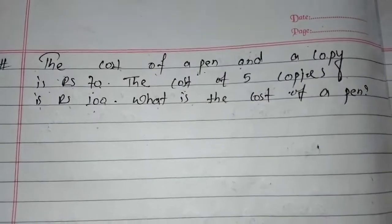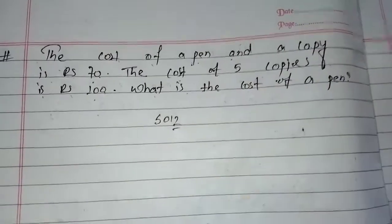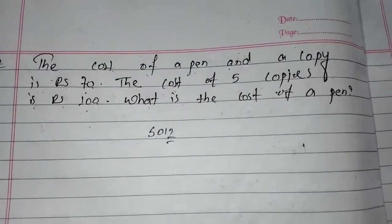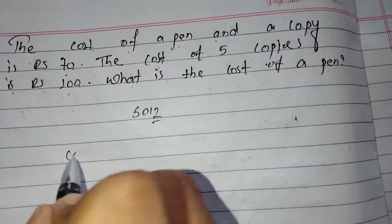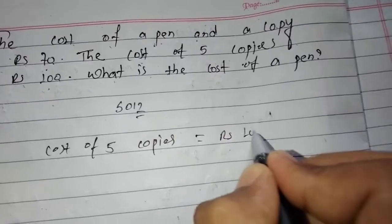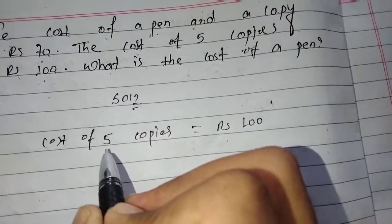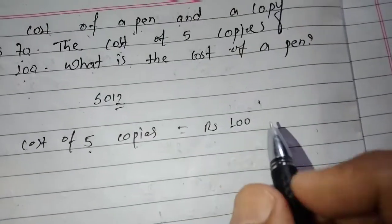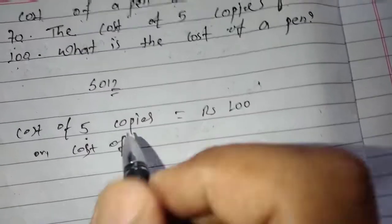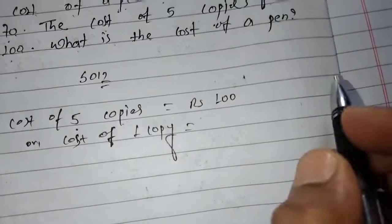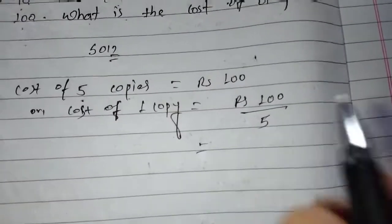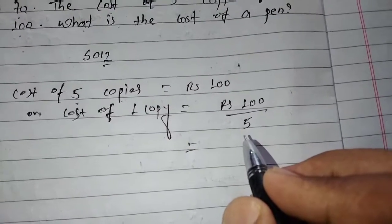To solve this, first of all we have to find the price of one copy. The cost of five copies equals 100 rupees. So the cost of one copy equals 100 divided by 5, which gives us 20 rupees. So the cost of one copy is 20 rupees.